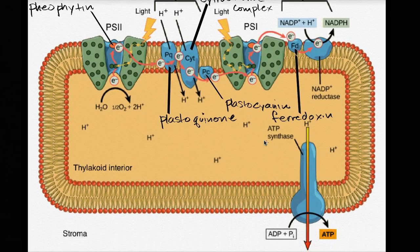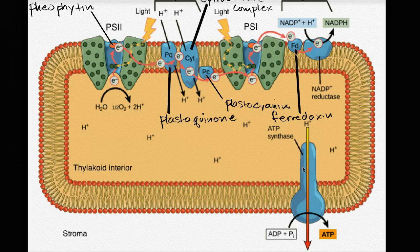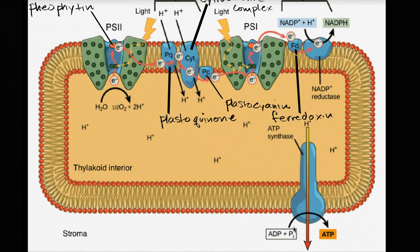And once again, what's going on here, this is the ATP synthase, that is using all this increased hydrogen ion concentration on the inside of the thylakoid to power the motor. The ATP synthase is the motor that is powered as these hydrogen ions go down their concentration gradient, and that energy is used to jam the phosphate onto the ADP to produce ATP.